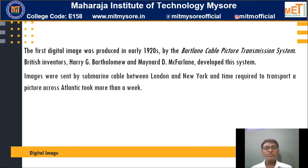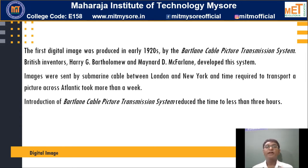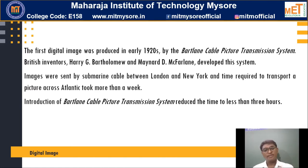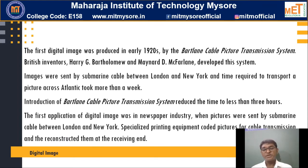Images were sent by submarine cable between London and New York, taking more than a week. The introduction of the Bartlein Cable Picture Transmission System made a change in the history of images. The first digital image produced in the early 1920s started to be used in the newspaper industry — the first application of a digital image. Pictures were sent by submarine cable between London and New York, with specialized printing equipment coding pictures for cable transmission and reconstruction at the receiving end.